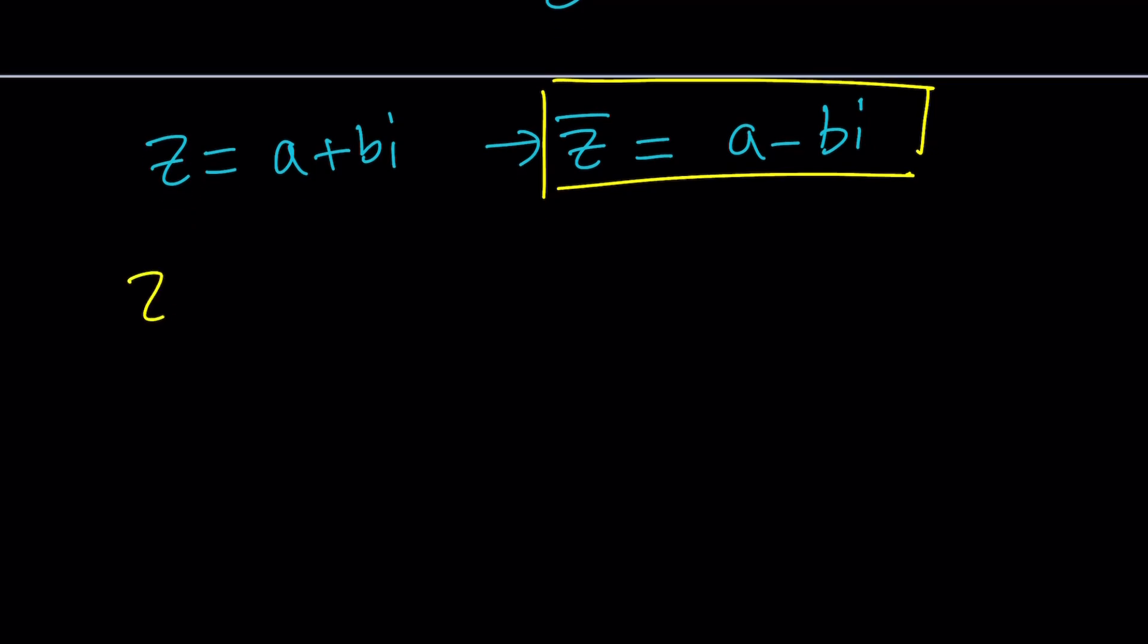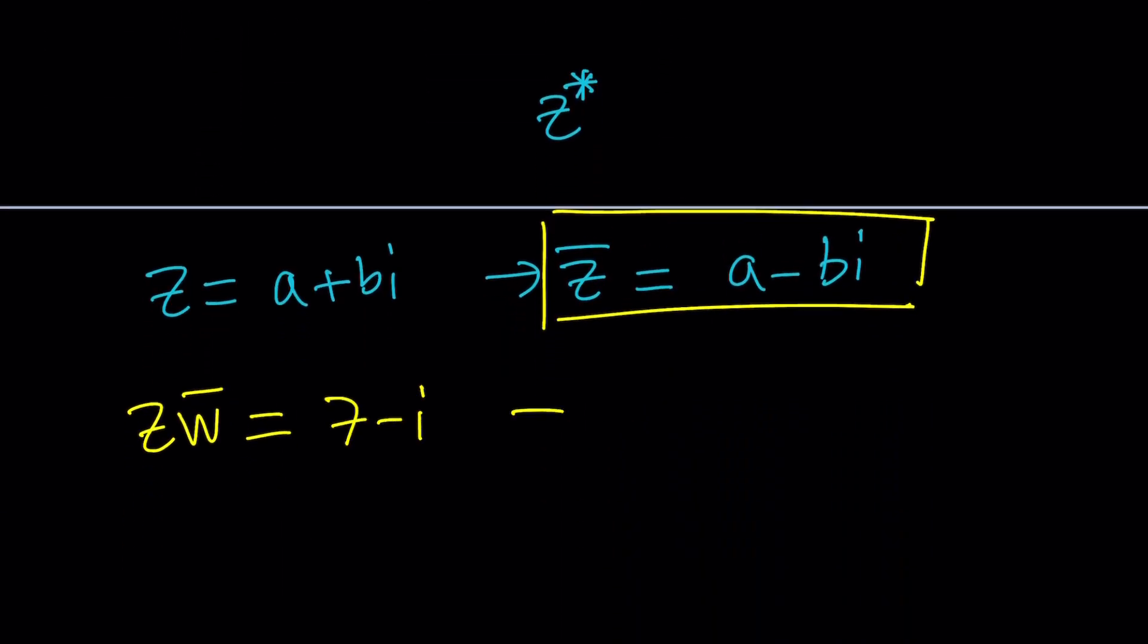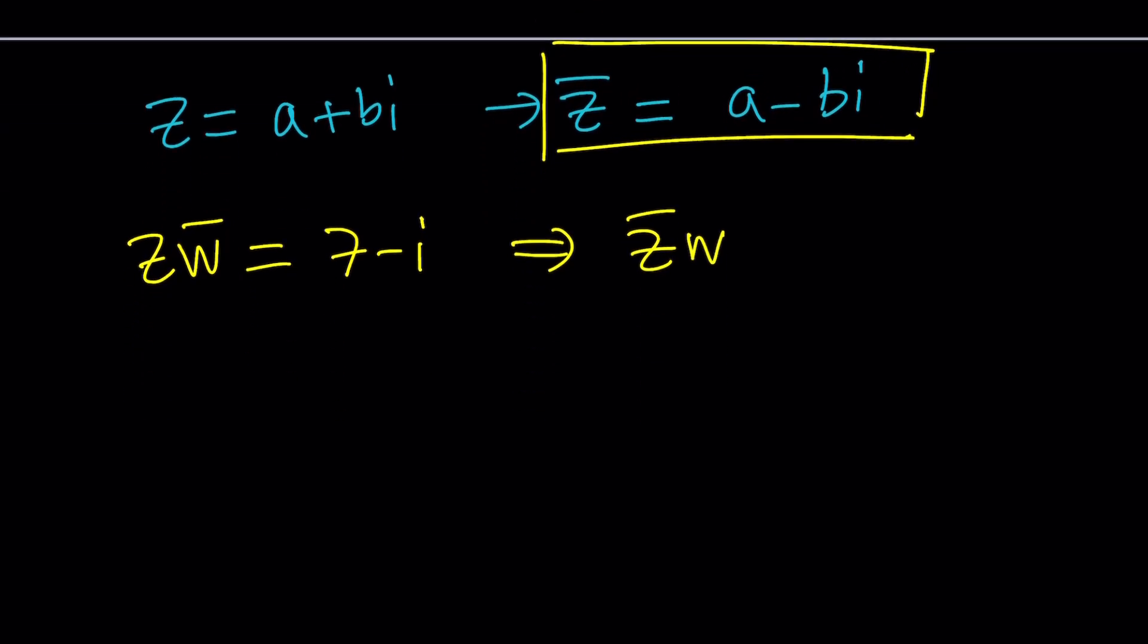We're given Z times W bar equals 7 minus i, and we're supposed to evaluate Z bar times W. I know some of you are probably getting impatient, but let's see how this rolls out. Since we have two complex numbers here, I'm going to name the first one a plus bi as I did before. So Z is going to be a plus bi and W is going to be c plus di.